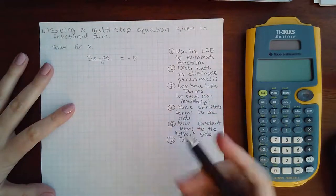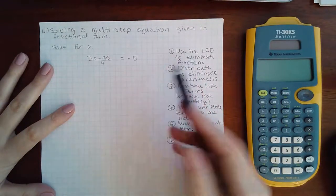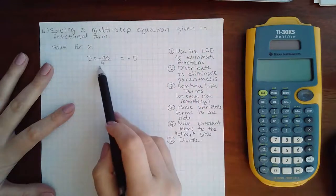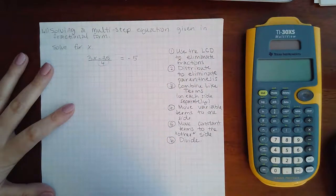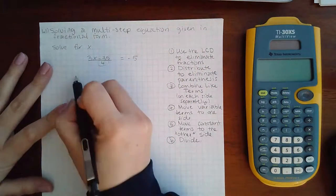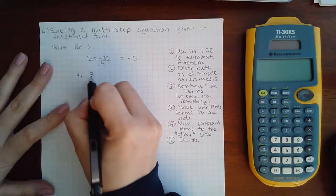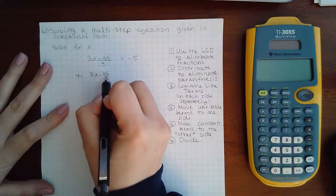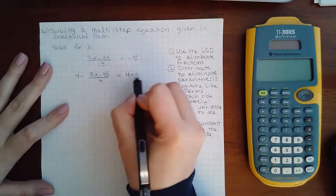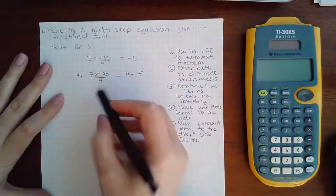Now, the first step I'm going to do is use the common denominator to get rid of the LCD. Here, the only denominator I have is four. So what I'm going to do is I'm going to multiply four to both sides of the equation.